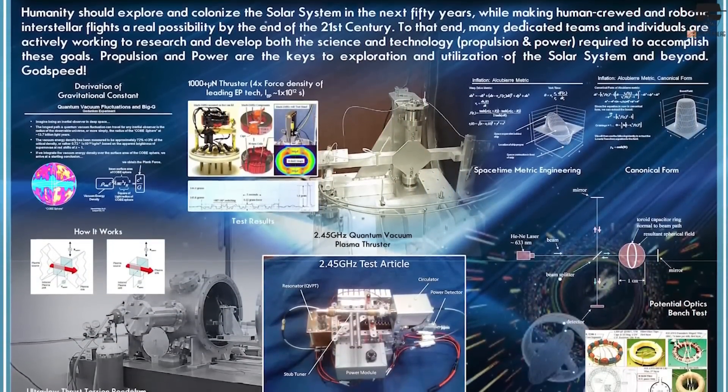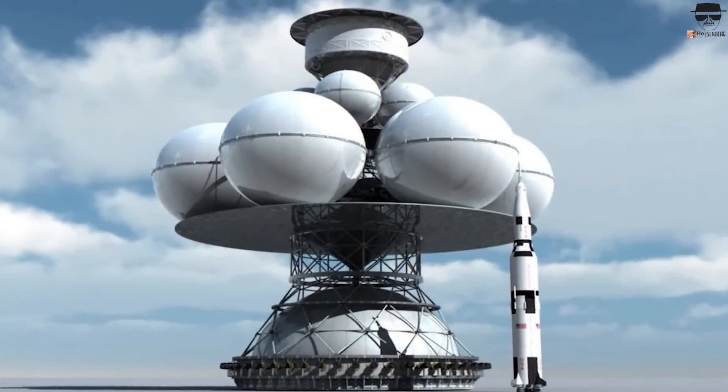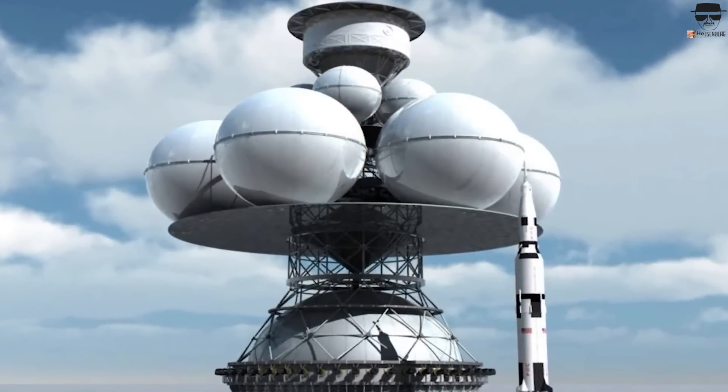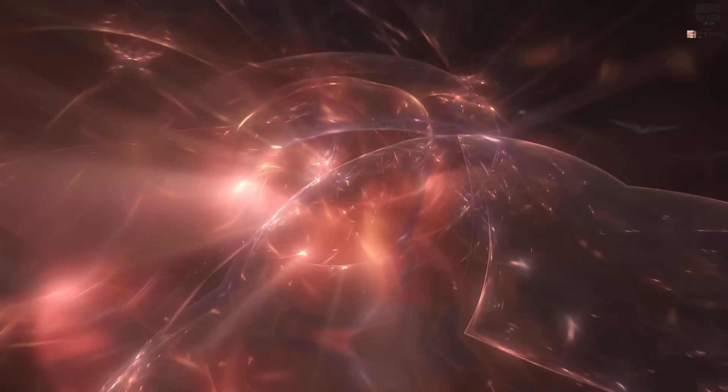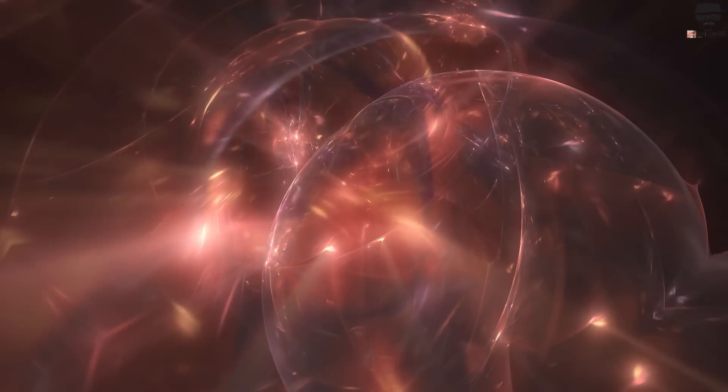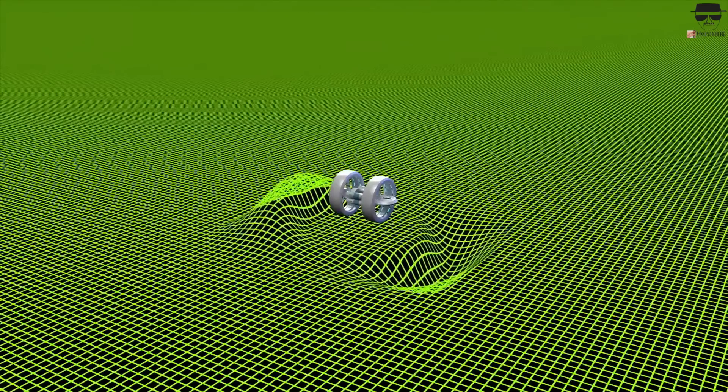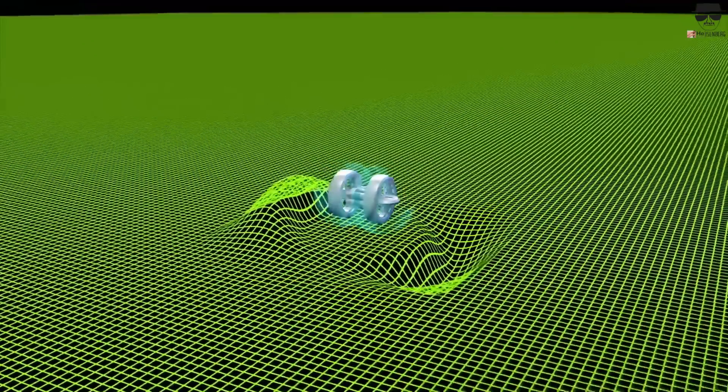Lentz, on the other hand, came up with a different technique that doesn't involve negative energy at all. In order to solve the general relativity equations, he employed a different geometric technique and discovered that a warp drive does not require negative energy. The bubble would be able to travel faster than the speed of light thanks to Lentz's approach.